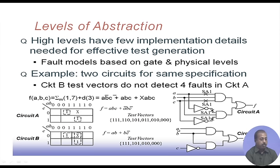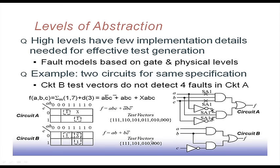Looking at the circuit implementations: for circuit A and circuit B, the test vectors generated for circuit A can detect different faults on all lines. However, those test vectors will not be able to detect certain faults in circuit B — specifically lines stuck-at-one — because the test vectors were generated considering the second implementation. So implementation-dependent test generation is important; we must have the proper implementation details for generating tests properly.